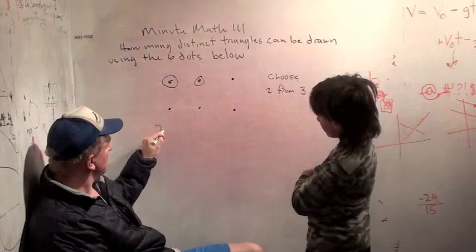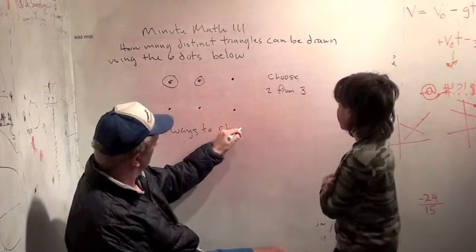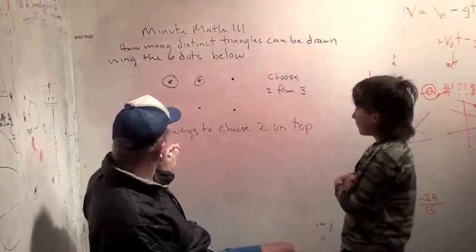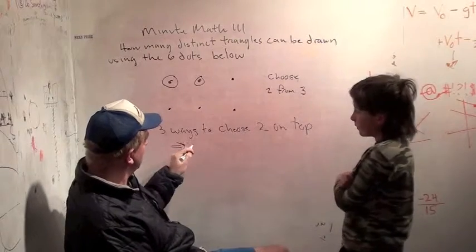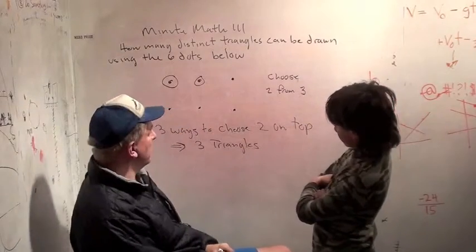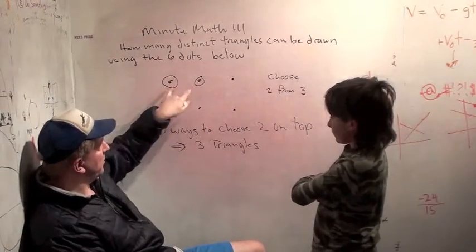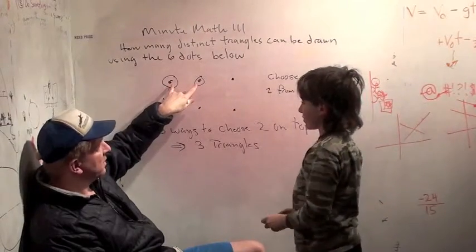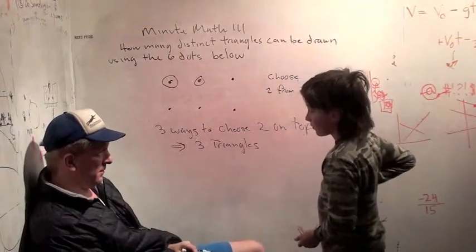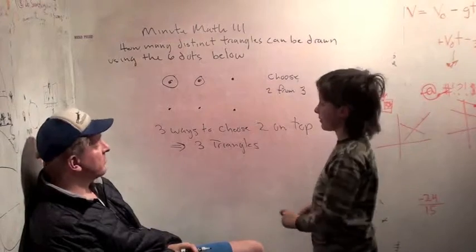So I have three ways to choose two on the top. And that leads, each one of those ways leads to three triangles. Okay. So how many ways are there? How many triangles are there with this pair? There's three triangles. How many triangles are there with two vertices total on the top? All of them? Yep. Nine. How did you figure that out? Three times three. Three times three.